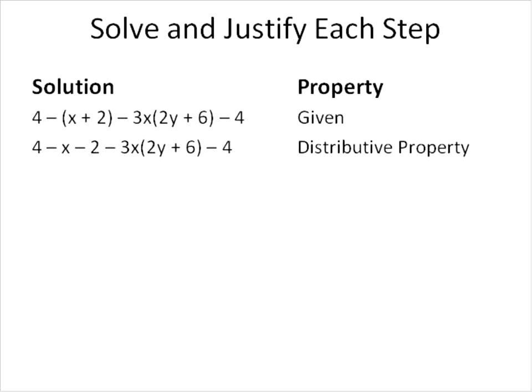The next step of our solution is another distribution where we take this negative 3x and multiply that times each term inside the parentheses. There's a lot of negatives in this one. Negative 3x times positive 2y will give us a negative 6xy. And negative 3x times 6 will give us negative 18x. Alright? So that's going to be the next step. And again, we used the distribution. We distributed that negative 3x to each term in the parentheses. So that's going to be the distributive property.